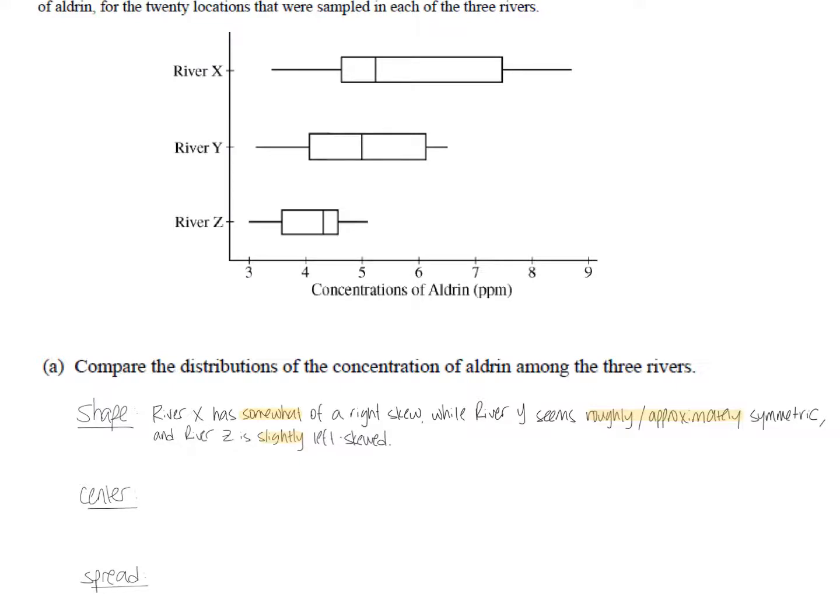When we're looking at river Y, even though, yeah, one of the whiskers here is a little bit longer than the other one, but due to the fact that the median appears to be right in the middle of Q1 and Q3, I would say roughly or approximately symmetric. I don't think it would be wrong to talk about a very, very slight left skew here. It's kind of up for interpretation, but you're just trying to demonstrate knowledge that you understand what shape means. Just keep in mind that when we talk about shape, your options pretty much are left skewed, right skewed, or symmetric. That's kind of what we're talking about when we do shape.